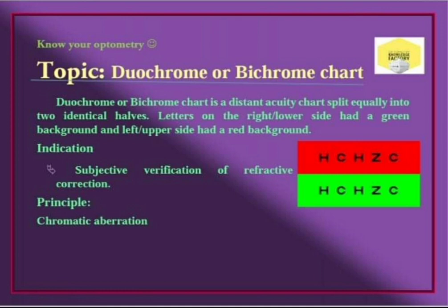The endpoint is that the clarity and sharpness of letters on both red and green backgrounds should be equal. From this, we can determine whether the patient is overcorrected or undercorrected.